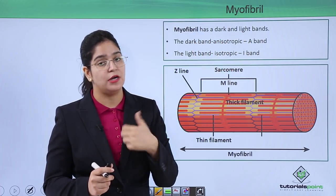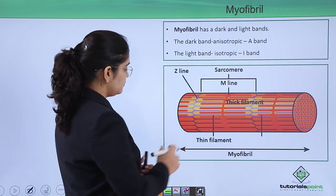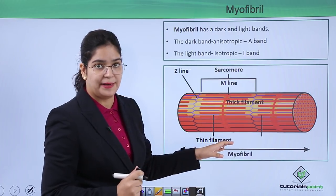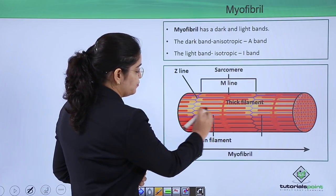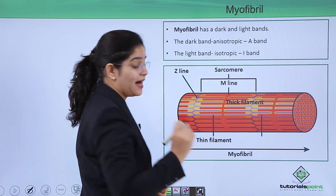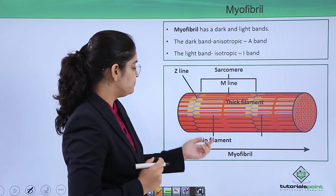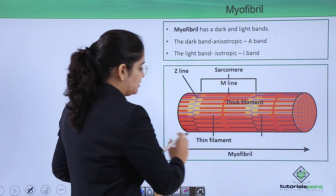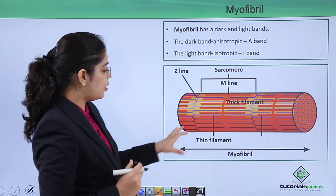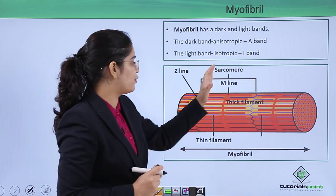Now look at this picture. The light blue lines show the thin filament — these blue lines are very thin. The red lines are thick, which is why they are called the thick filament. This is a myofibril, and the functional unit of the myofibril is the sarcomere.